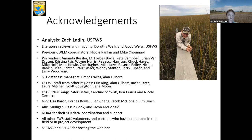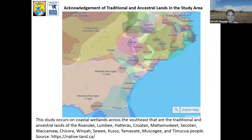In particular I want to acknowledge Zach Bladen, who now works for the Fish and Wildlife Service and was the mastermind behind the markdown code used to produce the trend analysis, and previous CWIM coordinators Nicole Rankin, who really got this project off the ground, and Mike Chouinard, who kept the reins going in between. I also want to acknowledge the traditional and ancestral lands in the study area. I'm speaking from Raleigh, North Carolina, on the traditional and ancestral lands of the Tuscarora and Lumbee people. The study area occurs on coastal wetlands that are the traditional lands of the Roanoke, Lumbee, Hatteras, Croatan, Madamasquite, Sekertan, Wakama, Shakora, Wenya, Siwi, Kuso, Yamasee, Muscogee, and Tumukwa people.